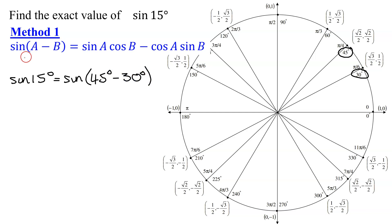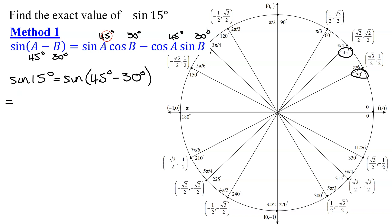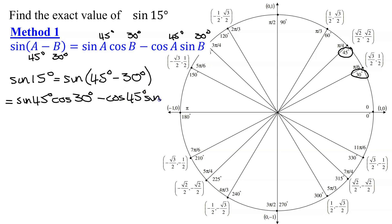So in our case, A is 45 degrees and B is 30 degrees. Wherever you see an A, you're going to put 45 degrees, and wherever you see a B, you're going to put 30 degrees. So I'm going to get the sine of 45 degrees times the cosine of 30 degrees minus the cosine of 45 degrees times the sine of 30 degrees.